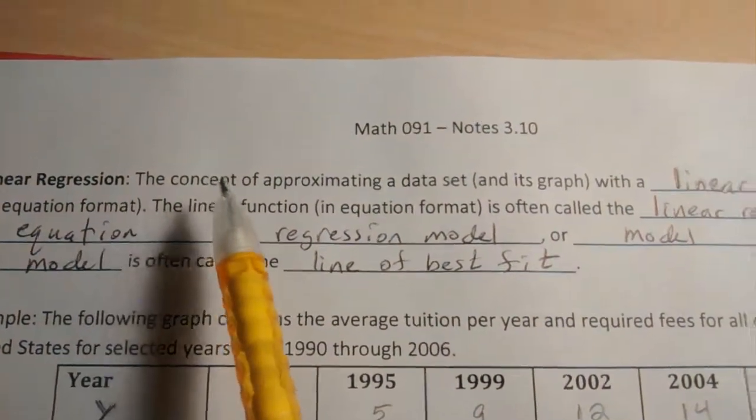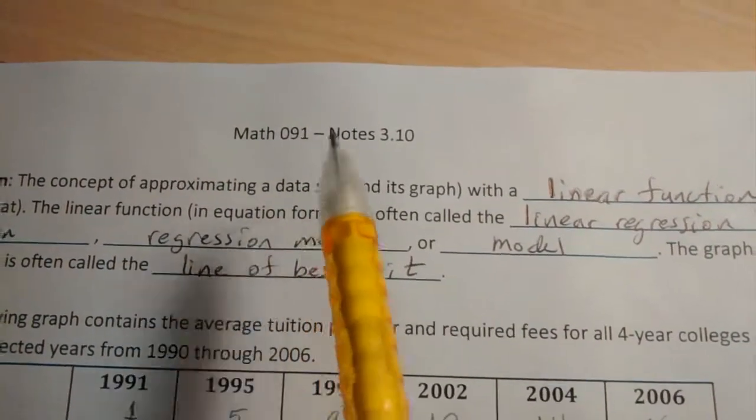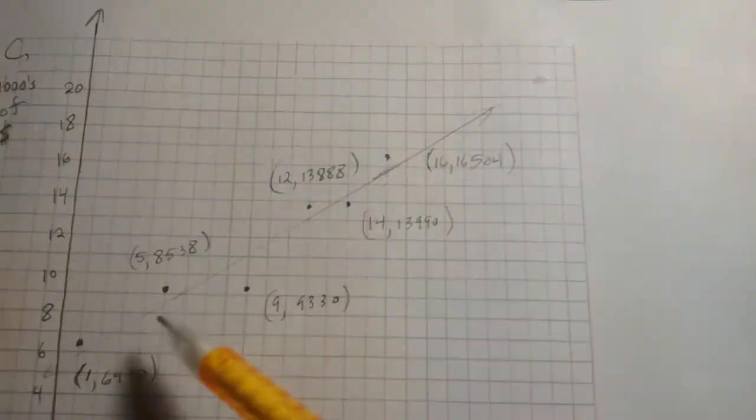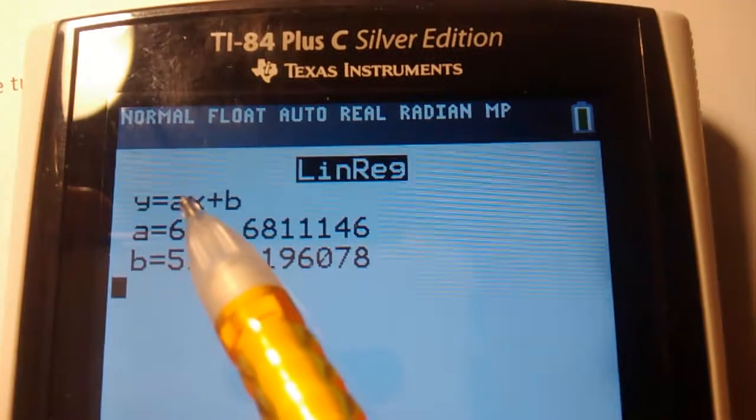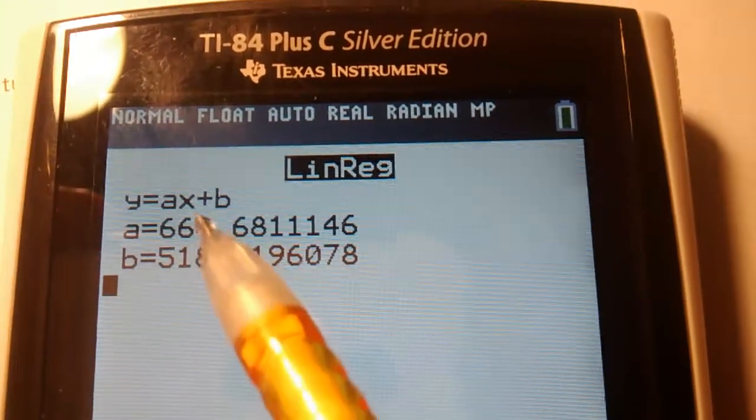This is what linear regression is all about. It's the concept of approximating a data set and its graph with a linear function, that line graphically, that equation with A and B values.